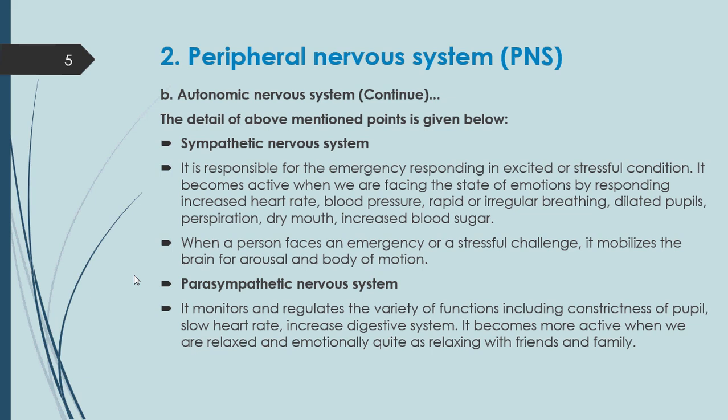The Parasympathetic Nervous System becomes more active when we are relaxed and emotionally quiet — especially when we are spending time with friends and family. That is when the Parasympathetic Nervous System is most active.